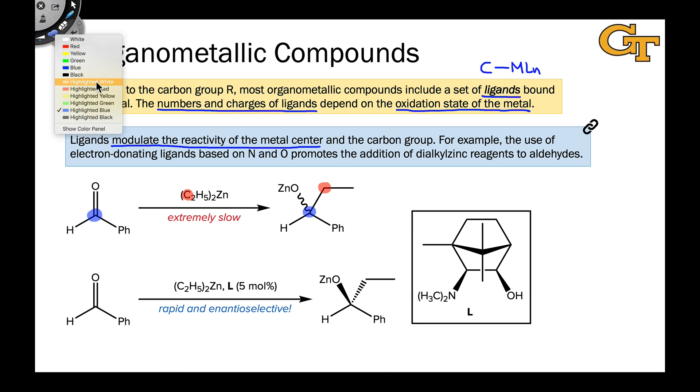However, when we throw in a little bit of a Lewis basic ligand, specifically this amino alcohol ligand L shown here, the reaction becomes a lot more rapid. So when we've added just 5 mole percent of the ligand L, the reaction becomes much more rapid, and we end up with selective formation of one of the two possible enantiomers.